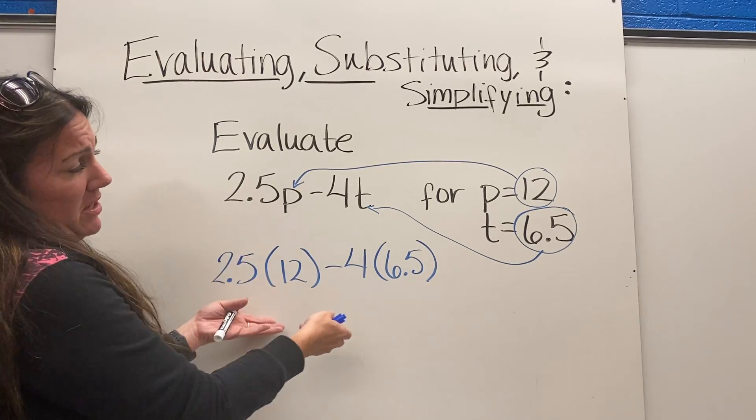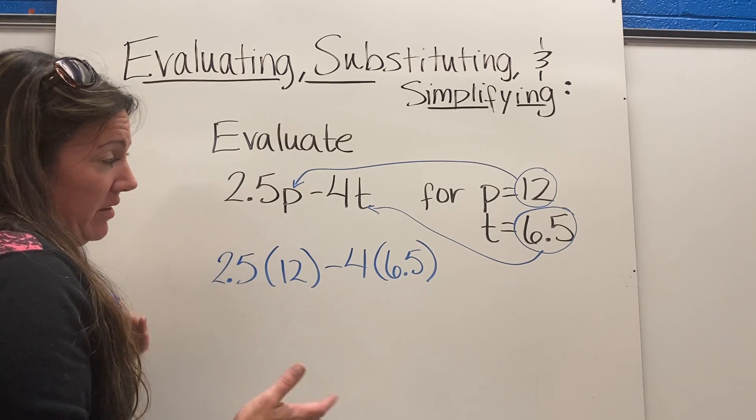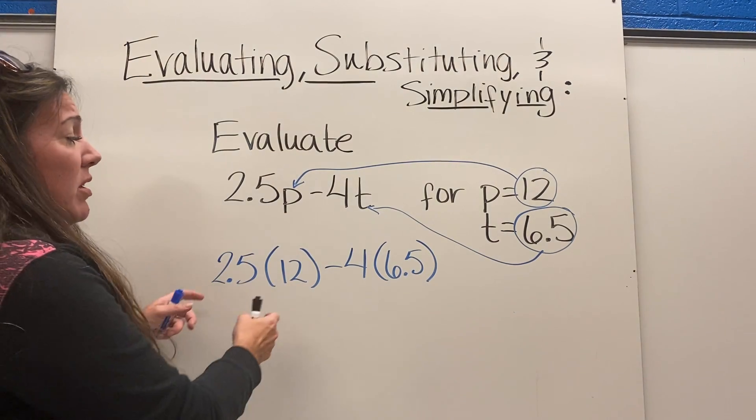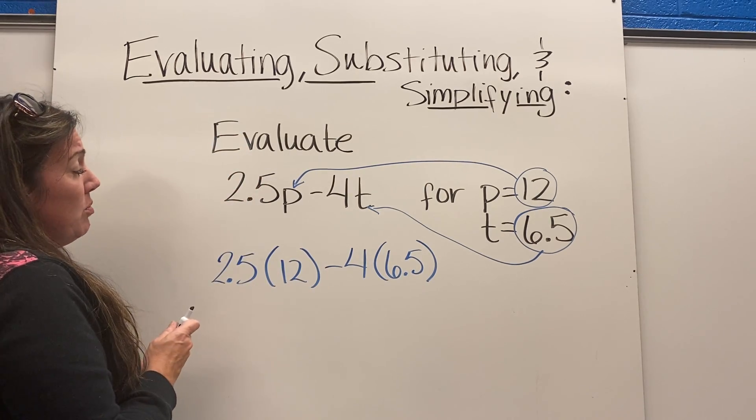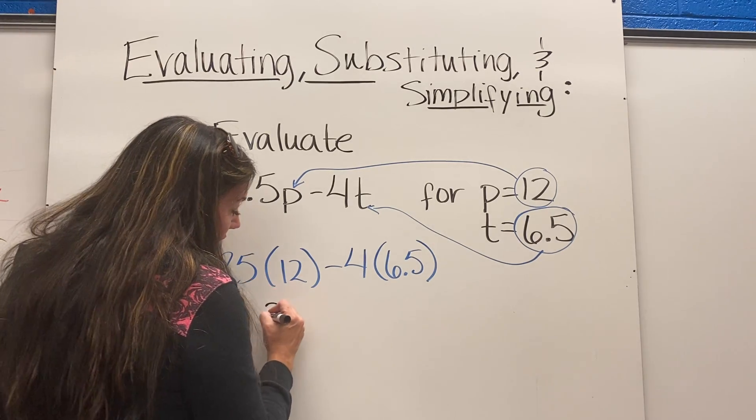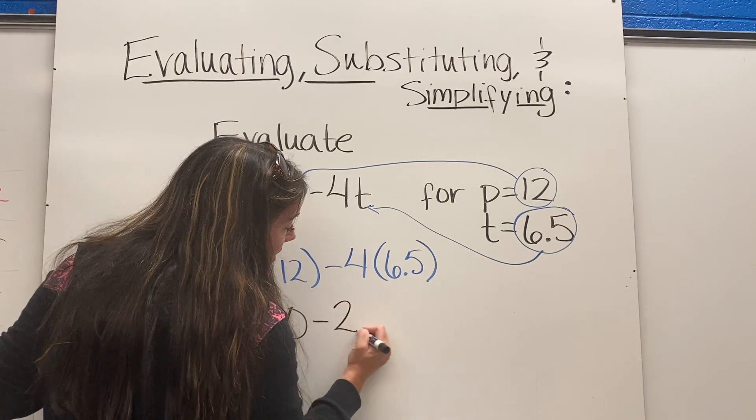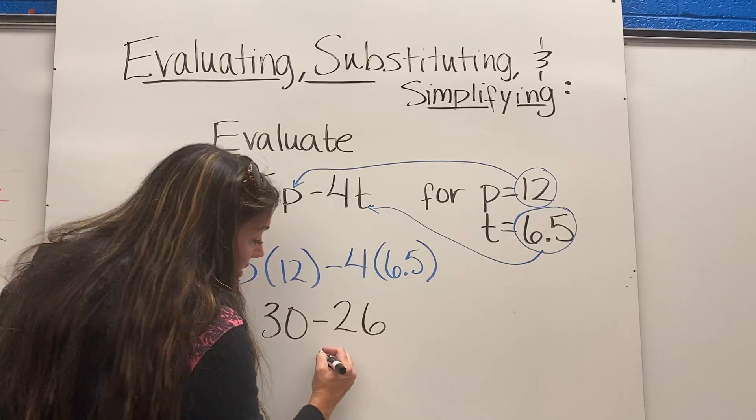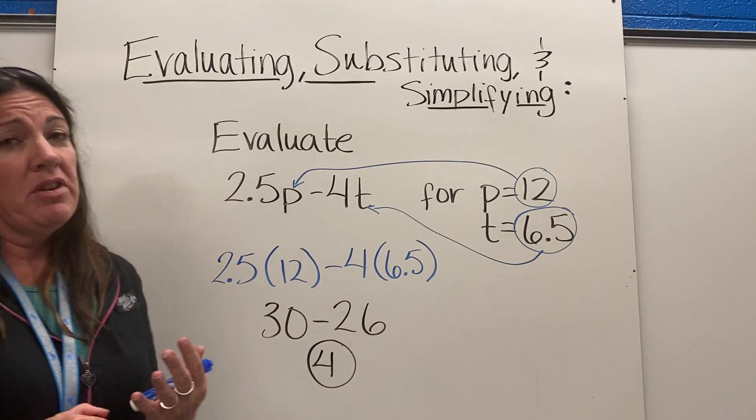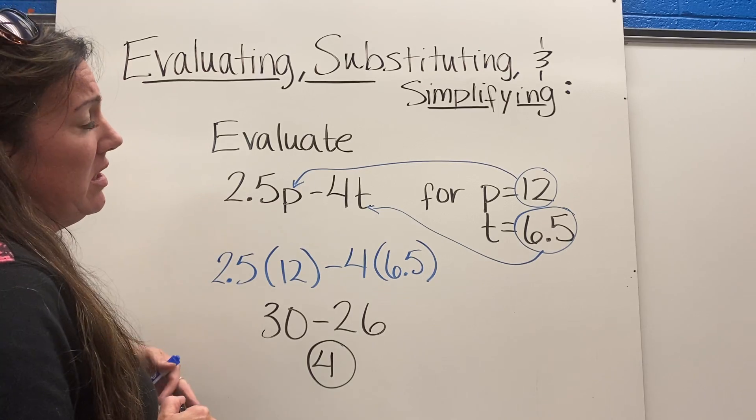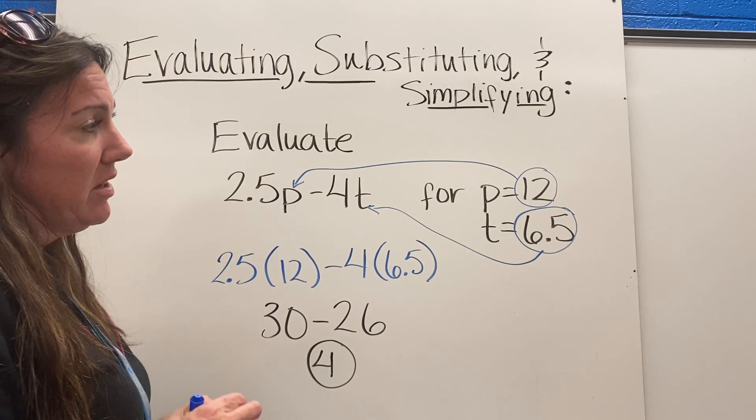We've substituted and now we need to simplify. Our order of operations say that we'll multiply these two first and then we'll deal with the subtraction sign. So 2.5 times 12 is 30, 4 times 6.5 is 26, and 30 minus 26 is 4. When you're doing your work on this, this is kind of what I would expect to see - that you could substitute it in, that you know how to simplify down and get your answer.